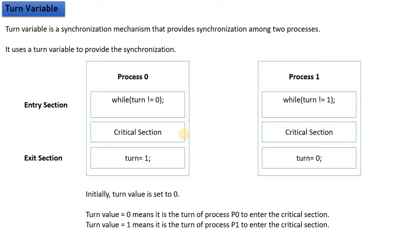There is a solution for two processes. For example, there are two processes: Process 0 and Process 1. The code will be the same for both processes. In the entry section, there is a little change — the turn value check is 0 for one and 1 for the other. The exit section sets 1 for Process 0 and 0 for Process 1.